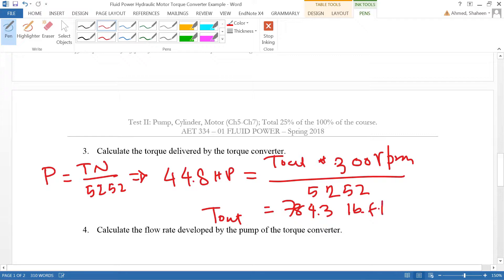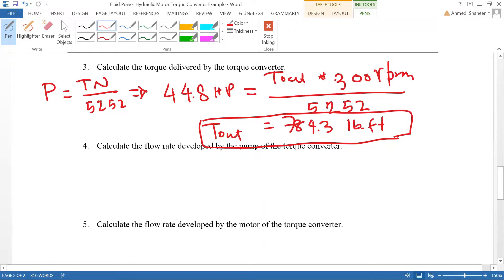Calculate the flow rate developed by the pump of the torque converter. We can say the theoretical flow rate is Vd, volumetric displacement, times the RPM. The volumetric displacement given is 2 quart.